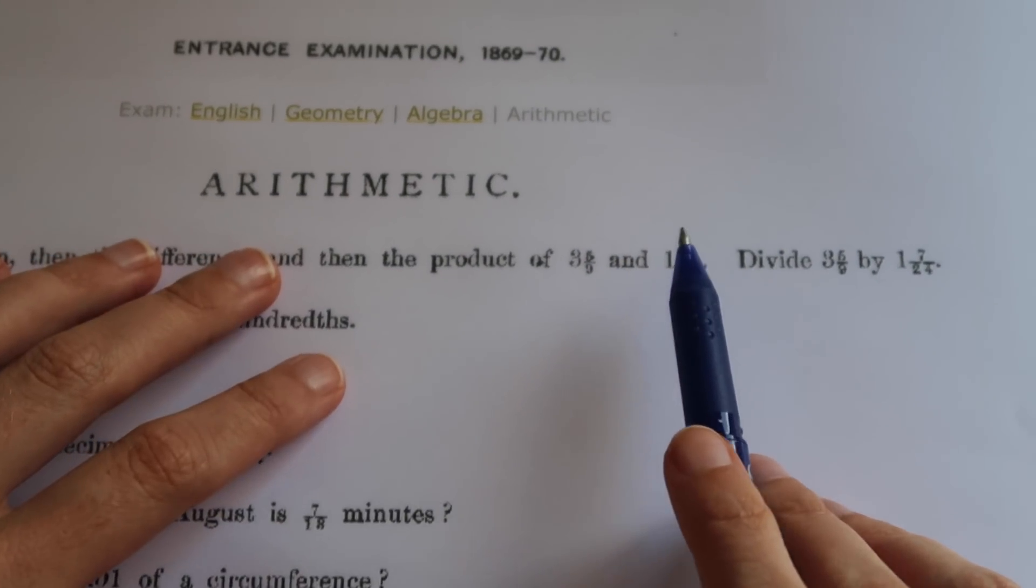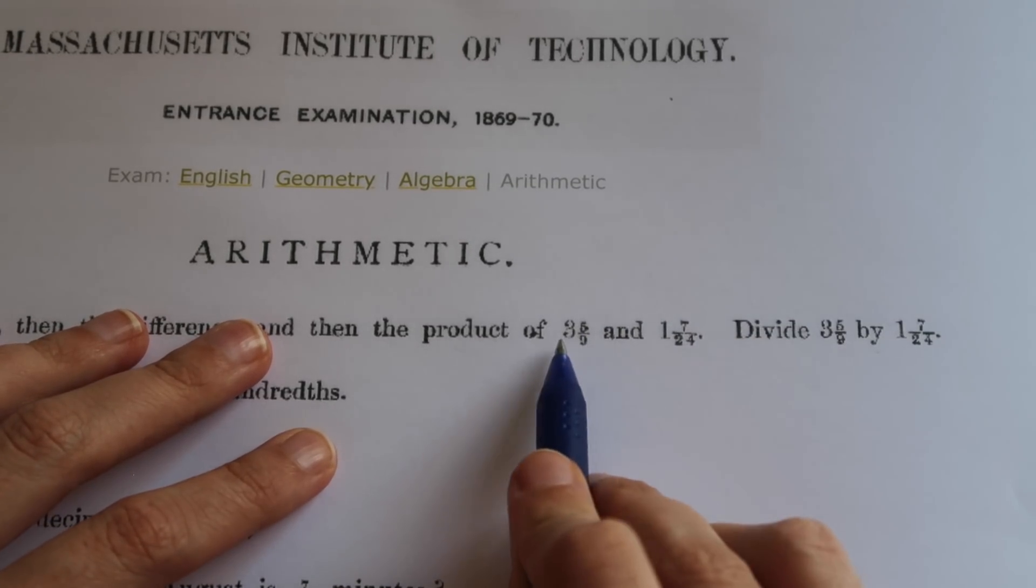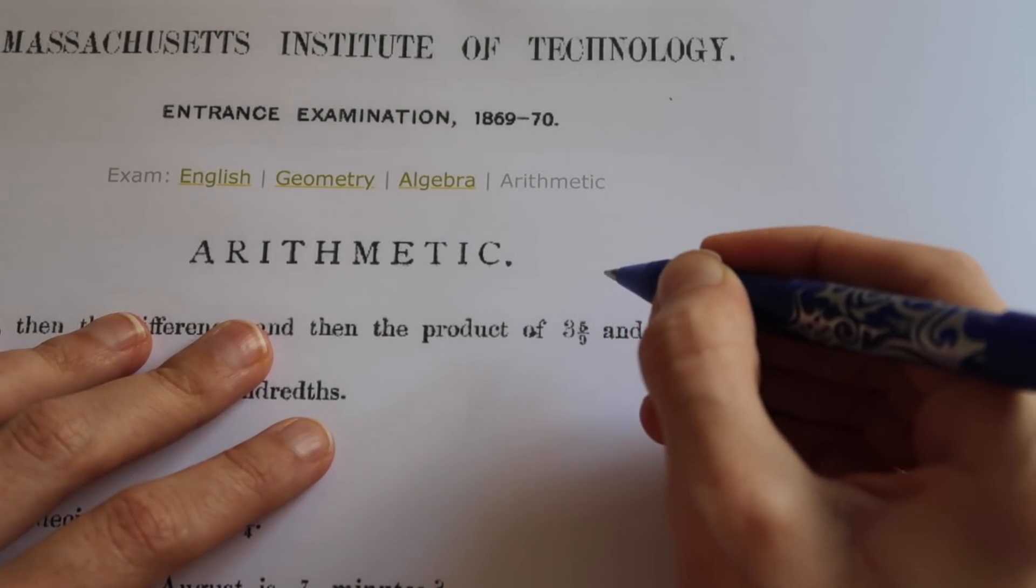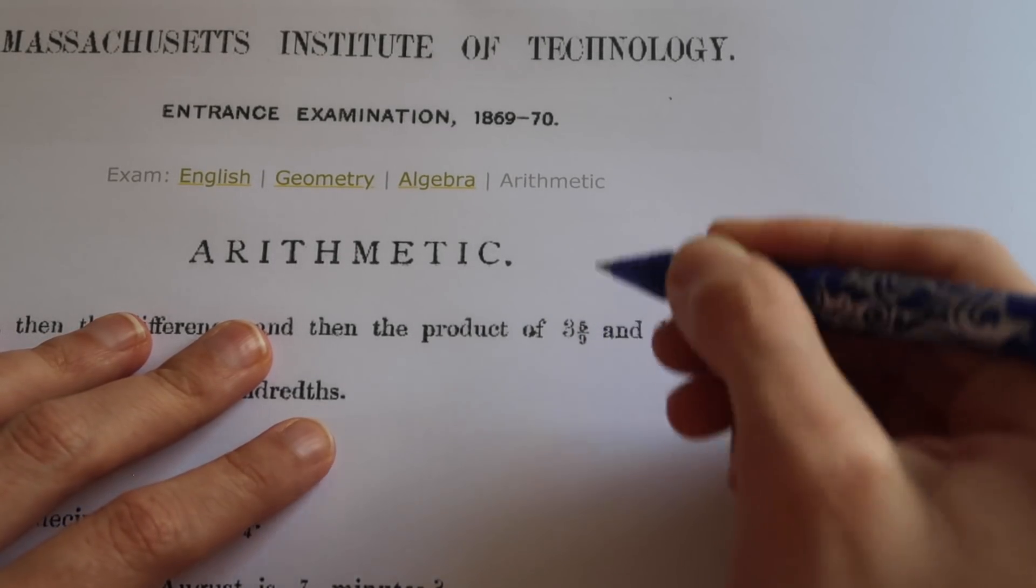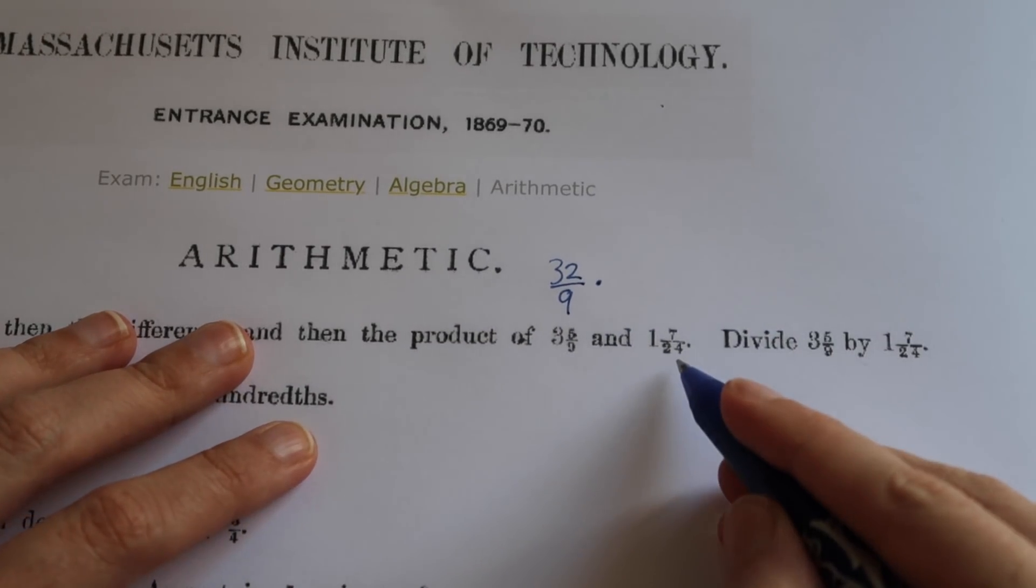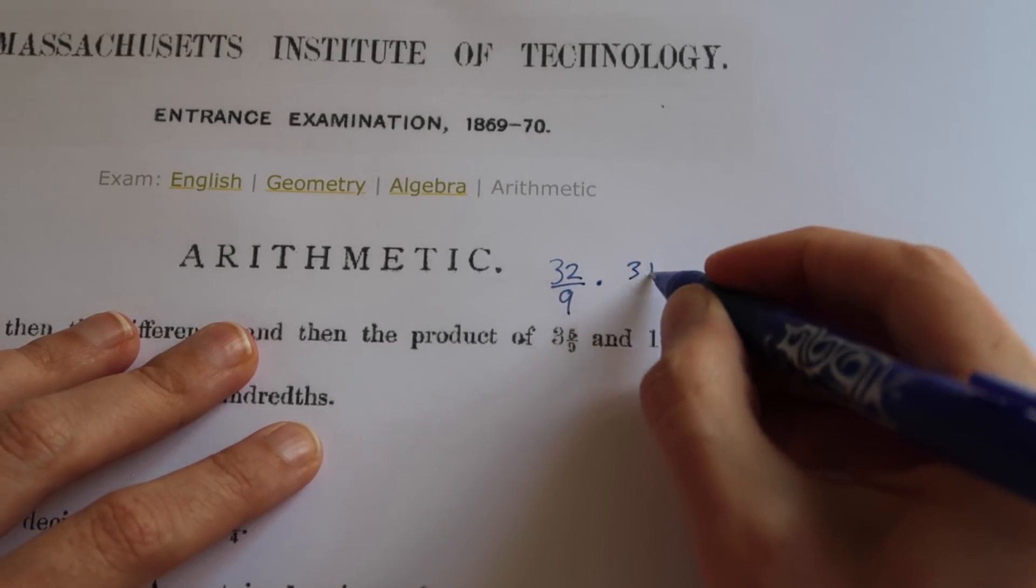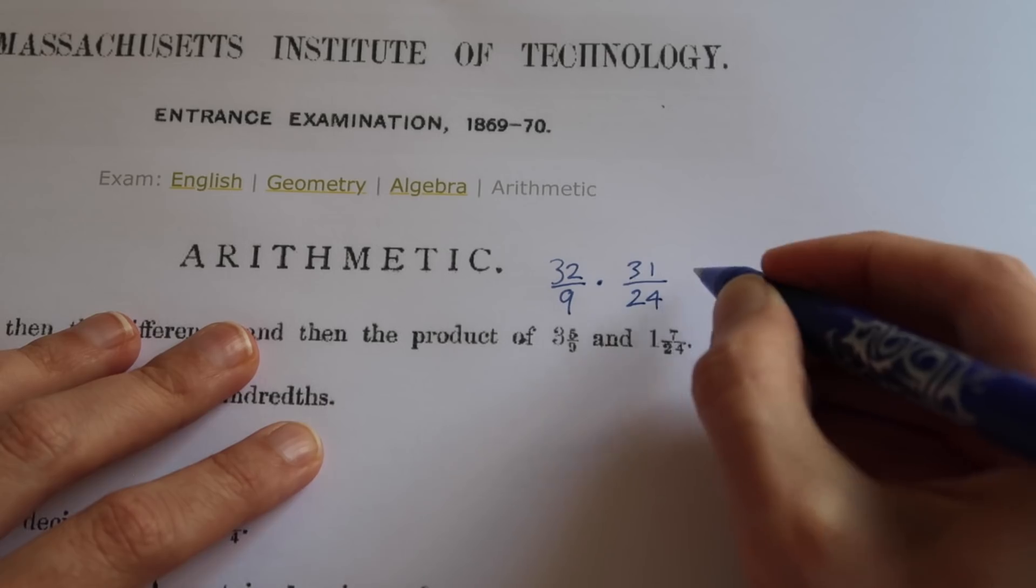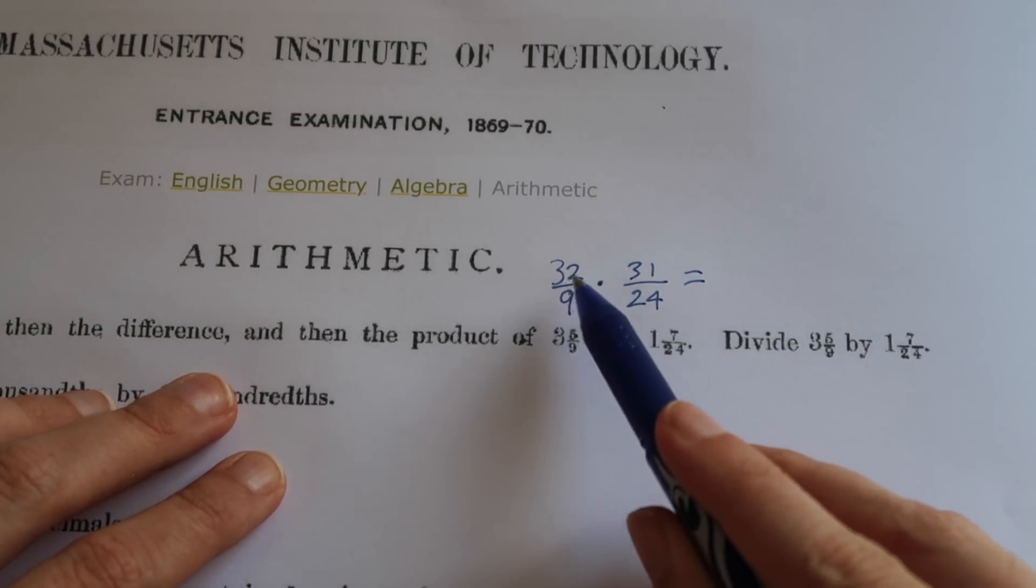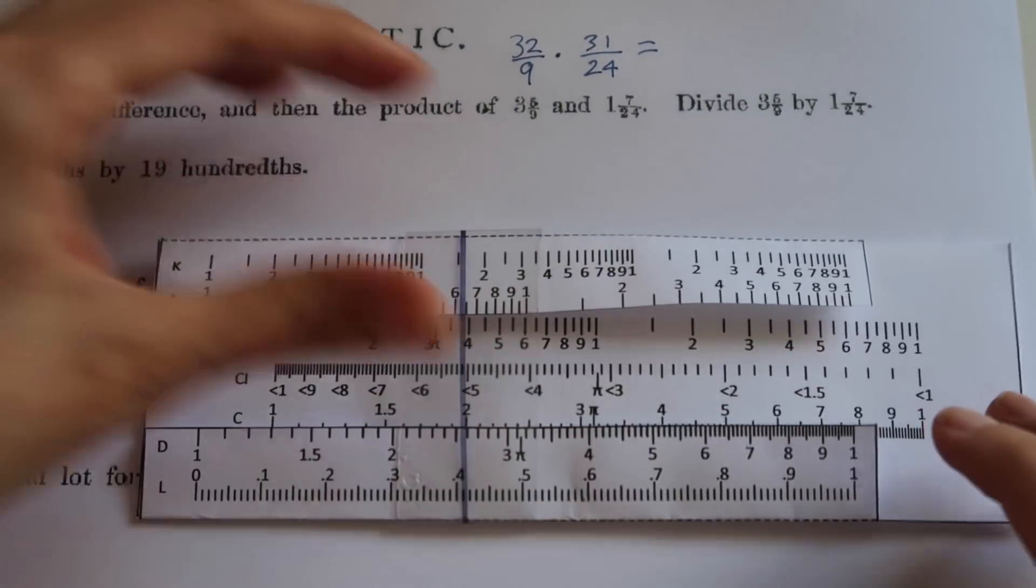Instead we'll just look at finding the product of these two fractions. First we want to convert them from being mixed into being improper fractions. So let's do 3 times 9, which is 27 plus 5, 32 over 9, that's going to be multiplied by 24 plus 7, 31 over 24. So our first difficult multiplication we need to do is 32 times 31. Let's do it on our slide rule.